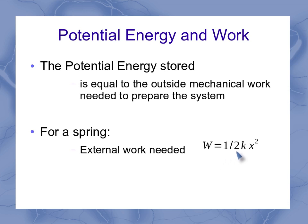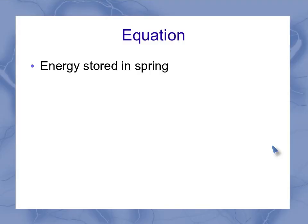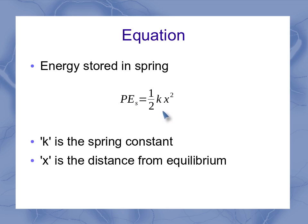From our earlier studies, we showed that was 1/2 kx squared. So the potential energy is that same 1/2 kx squared. Looking at this in more detail, the energy stored in the spring can be written as PE_s = 1/2 kx squared, where k is the spring constant.